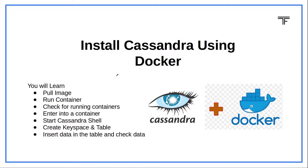Welcome back. In this session, we will be seeing how we can install Cassandra utilizing Docker. We will see how we can pull the Docker image, run the container, check for running containers, enter into the running container, start the Cassandra shell, and insert data into one of the tables and check the data. Let's move ahead and do the same.